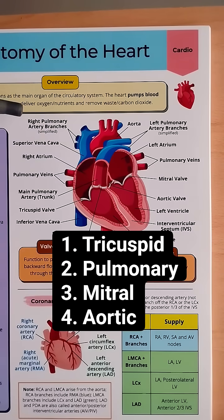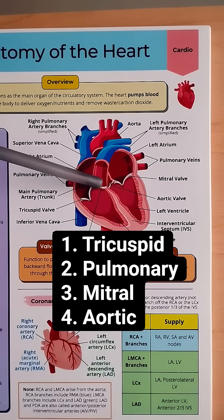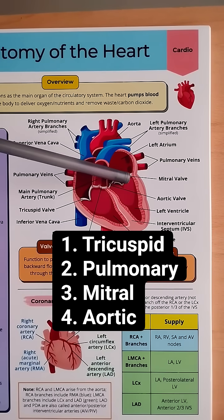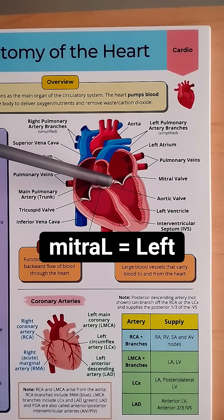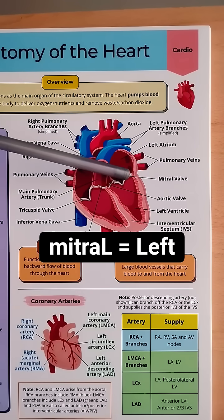Then we have four valves: the tricuspid valve on the right, the pulmonary valve by the main pulmonary artery, the mitral valve on the left, and the aortic valve by the aorta. You can use the L in mitral to remember it's on the left.